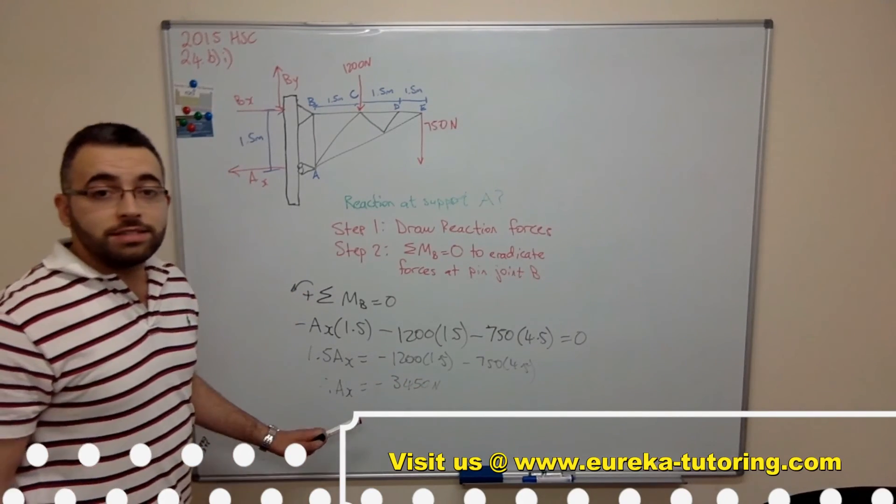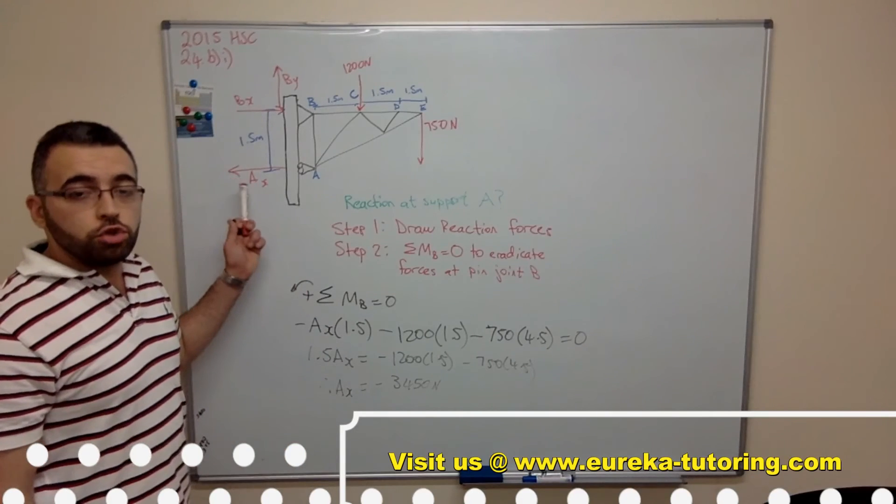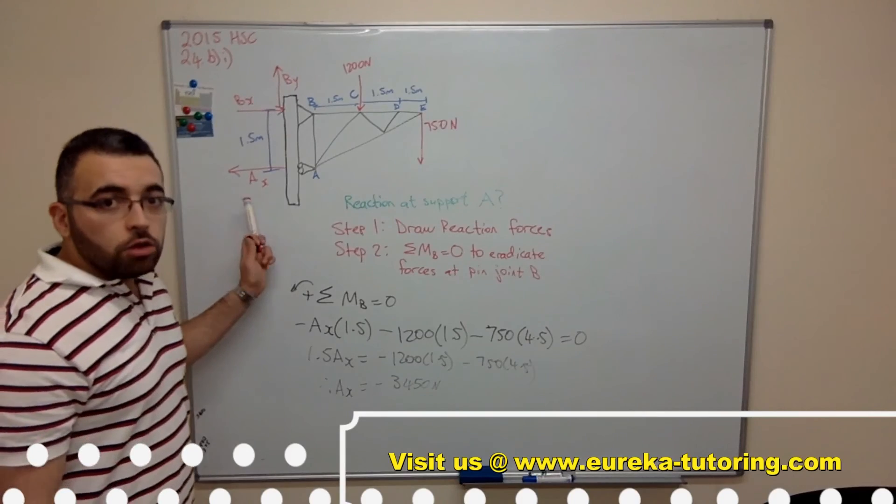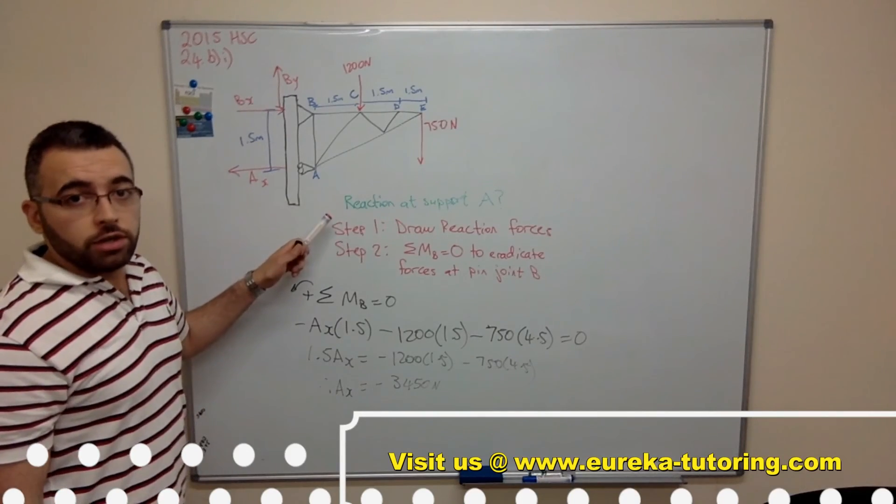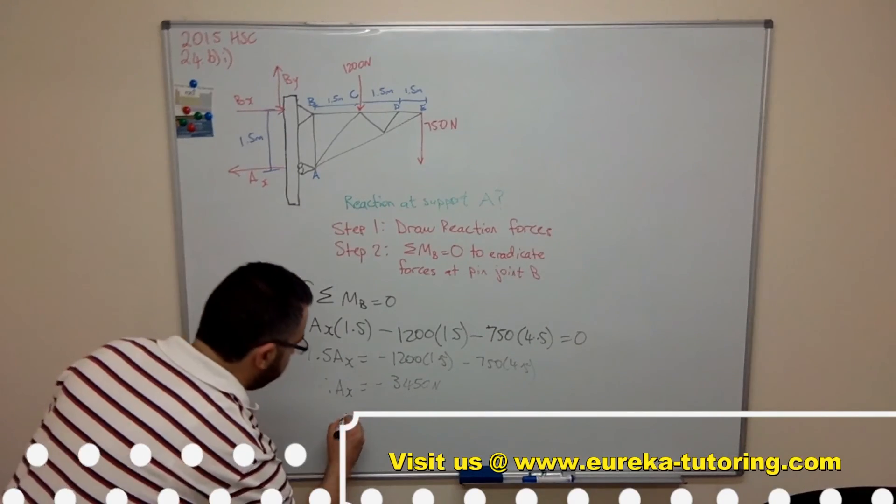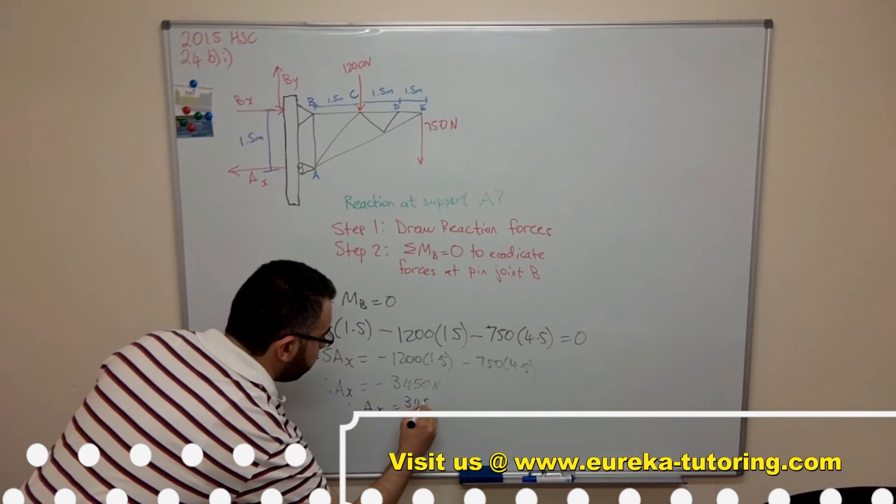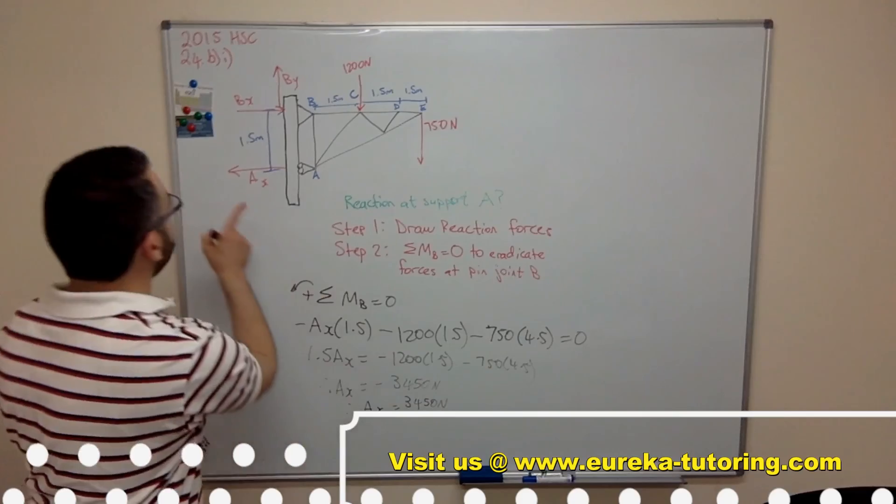Now because my Ax is negative, that means I've assumed this direction incorrectly. So to correct that all we need to do is just flip the direction of Ax. Therefore Ax equals 3,450 newtons going that way.